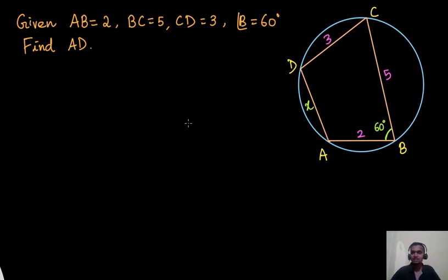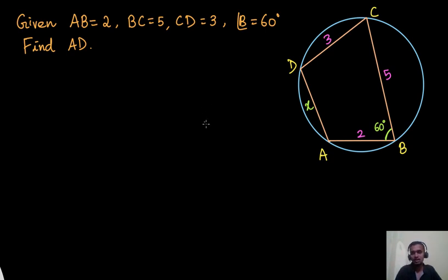Hello everyone. In this video, we have another interesting geometry question. In the given picture, as you can see, we have a cyclic quadrilateral. A cyclic quadrilateral is basically a quadrilateral — a four-sided figure whose four vertices or four corners are on a circle. It is like we are fitting a quadrilateral exactly inside a circle. Here in this cyclic quadrilateral, three sides are given: AB, BC and CD.